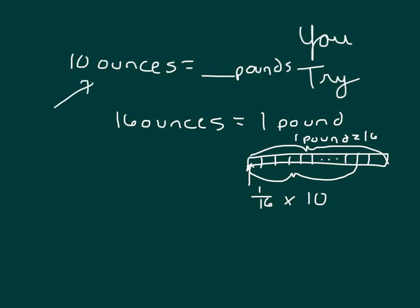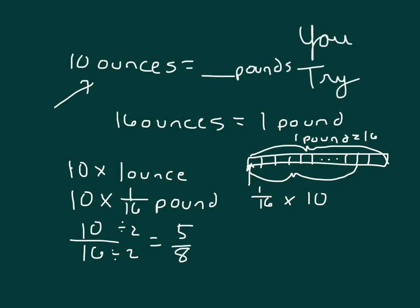Our original problem here is 10 ounces and so I know it's going to be less than a pound. You may have used this approach where you want 10 times one ounce and we know that that ounce is equal to one-sixteenth of a pound so we have 10 over 16 which we can simplify to 5-eighths so 10 ounces is equal to 5-eighths pounds or 5-eighths of a pound. Remember to simplify those fractions.